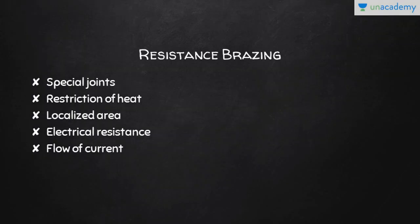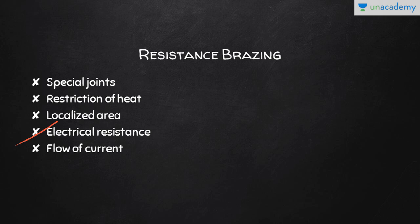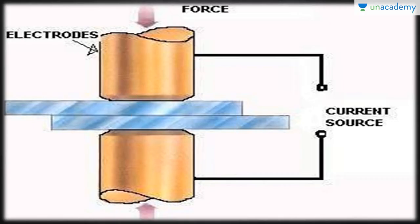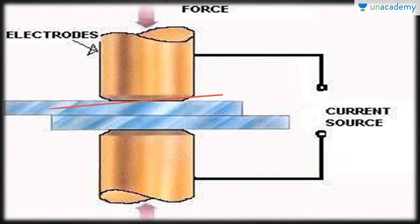Resistance brazing is used for special joints where heat must be restricted to a localized area without overheating the surrounding parts. The heat required for brazing is produced due to the electric resistance offered by the joint members to the flow of current through them. You can see the resistance brazing setup here — the filler material is kept in placement, electrodes are placed over the joint, and it is connected to a current source.